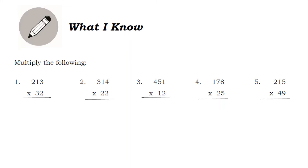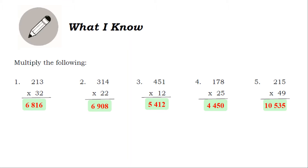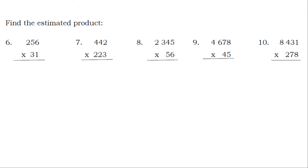Multiply the following: Number 1, 213 times 32 is equal to 6,816. Number 2, 314 times 22 is equal to 6,908. Number 3, 451 times 12 is equal to 5,412. Number 4, 178 times 25 is equal to 4,450. Number 5, 215 times 49 is equal to 10,535. Find the estimated product answers.